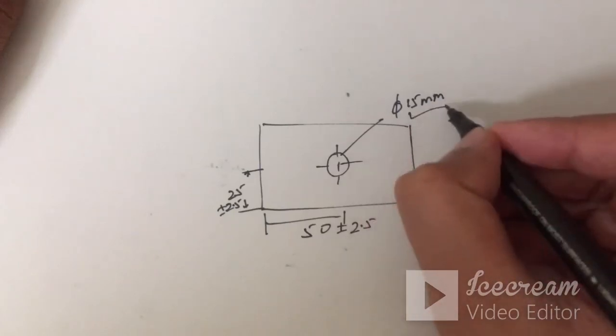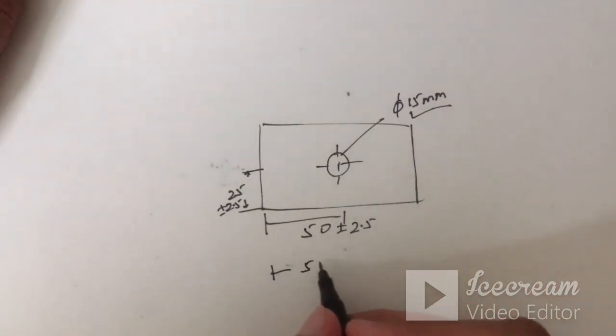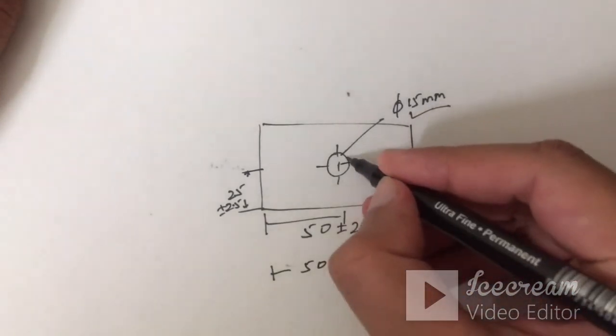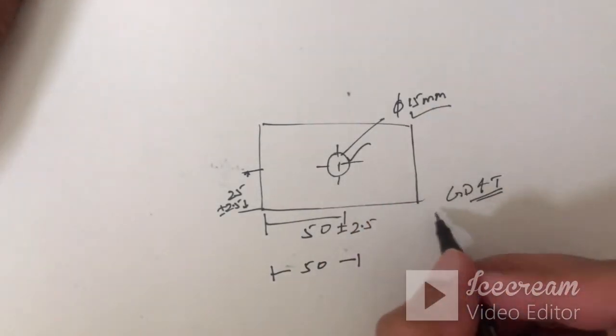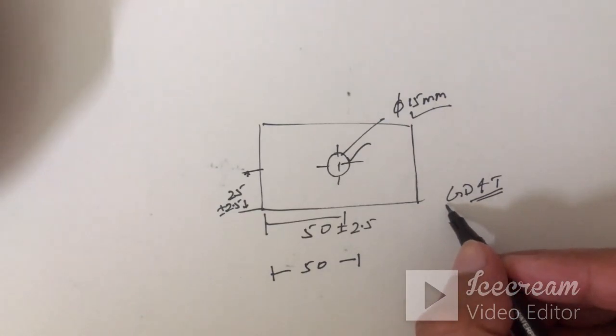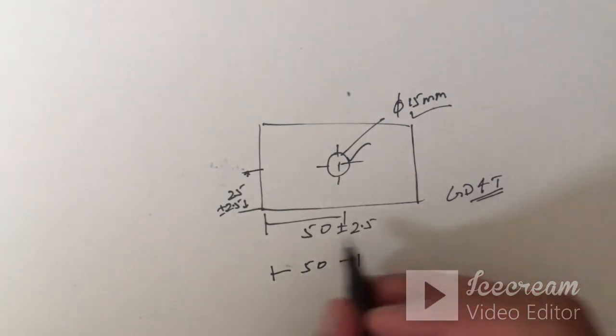So we will keep these dimensions as basic dimensions and we will define our feature control on this hole here. So in our next session we will see how with the help of GD&T we can solve such type of conflicts.